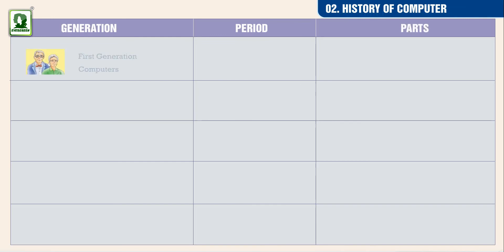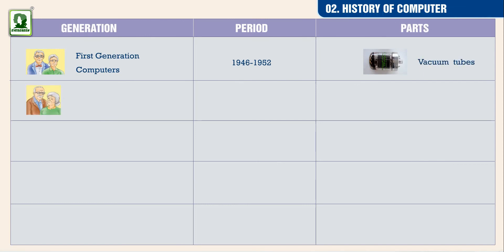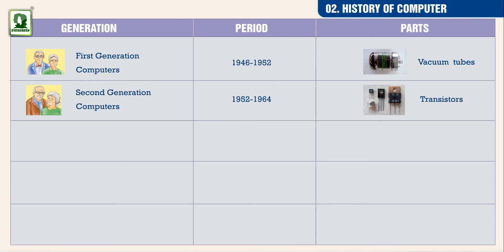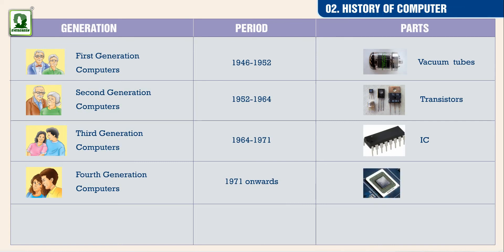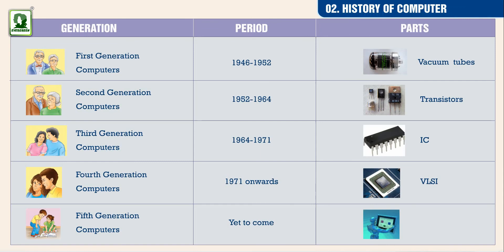In the first generation computers, the period was 1946 to 1952, and the major parts were based on vacuum tubes. In the second generation computers, the period was 1952 to 1964, and the major parts were based on transistors. In the third generation computers, the period was 1964 to 1971, and the major parts were based on ICs. In the fourth generation computers, from 1971 onwards, the major parts were based on VLSI. The fifth generation computers are yet to come, and their major parts will be based on artificial intelligence.